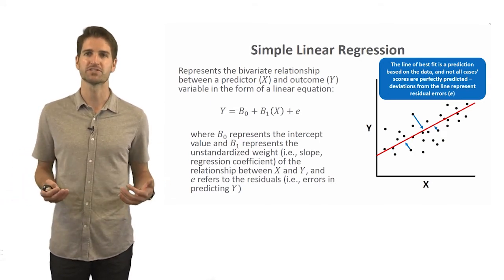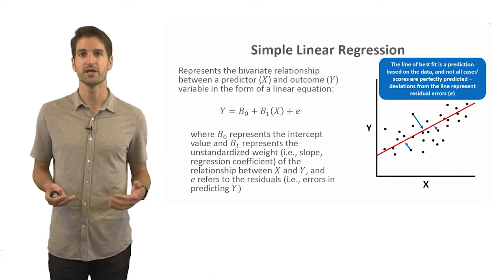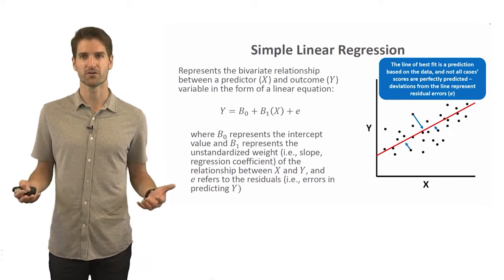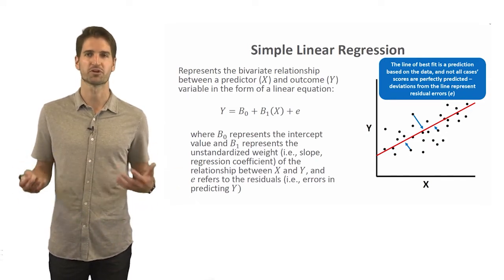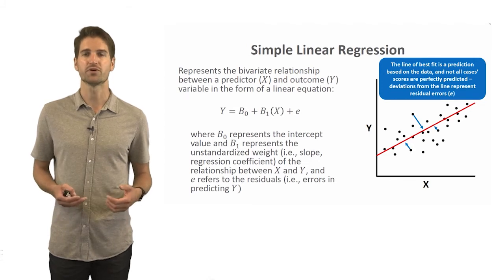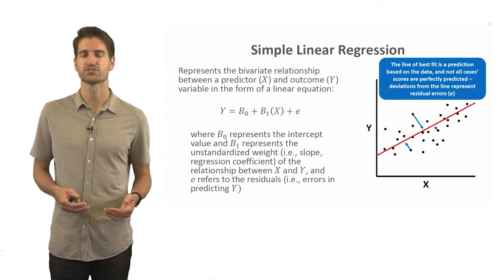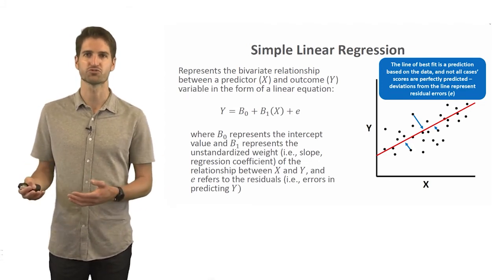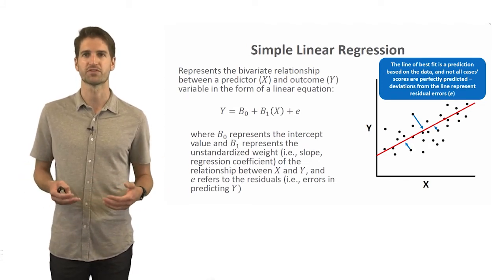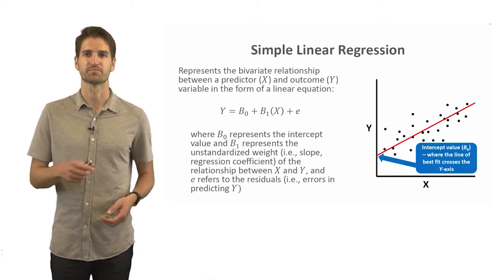In this case, we can see that there isn't perfect prediction — there are errors, which is to be expected, especially when working with human data. These are called your residual errors or simply your residuals, and we represent those by the little e in the equation.